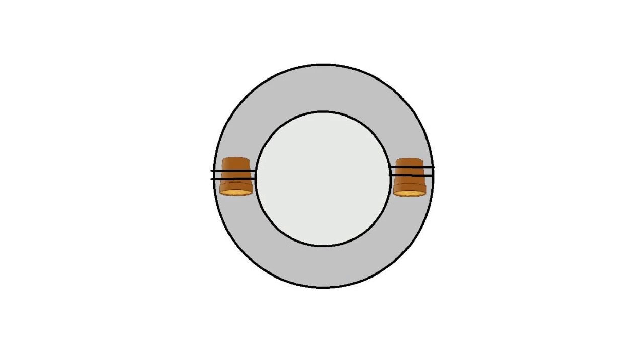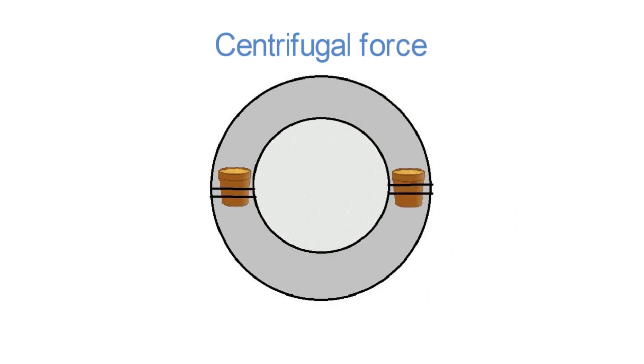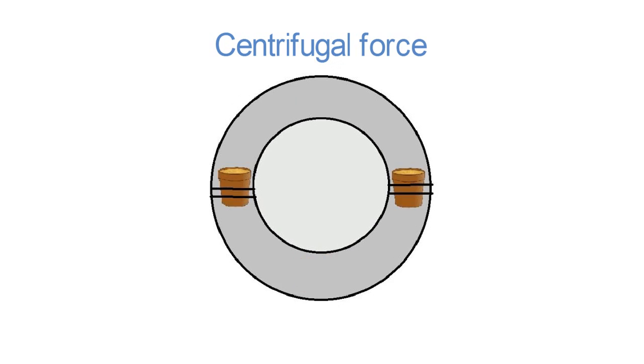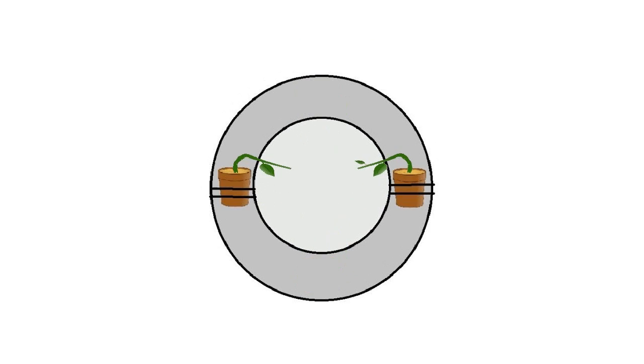In another experiment, a bunch of seedlings were attached to a disc and the disc was rotated at a high speed. This rotating disc made seedlings feel a continuous centrifugal force radially outwards from the disc. Such a force can be called a simulated gravity.